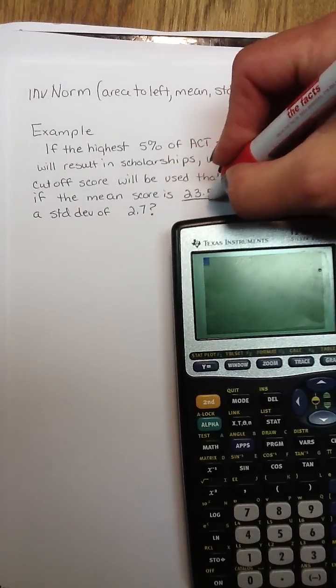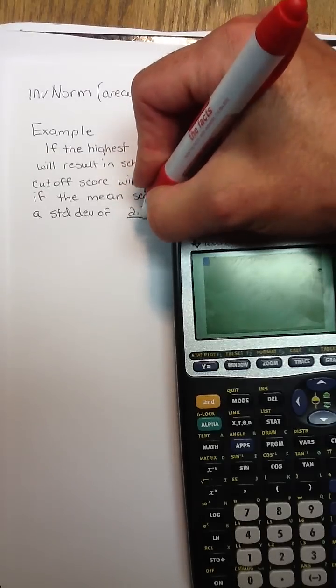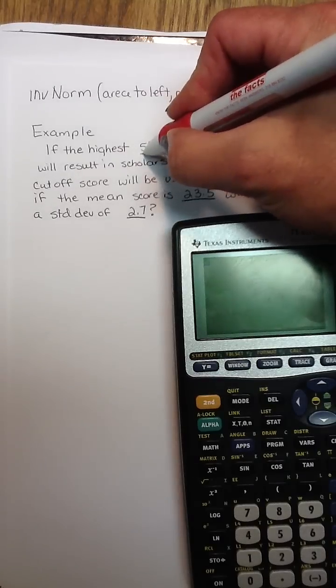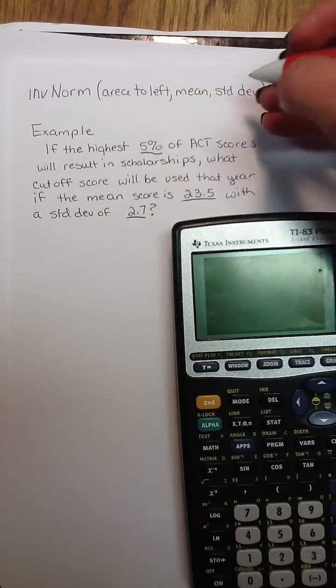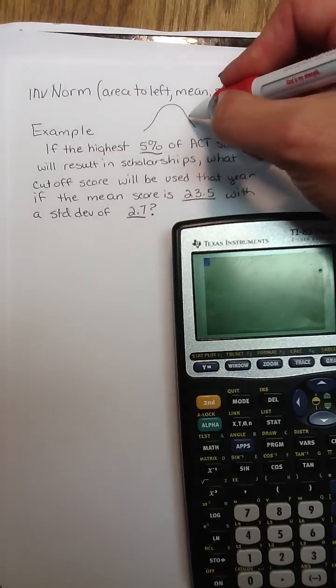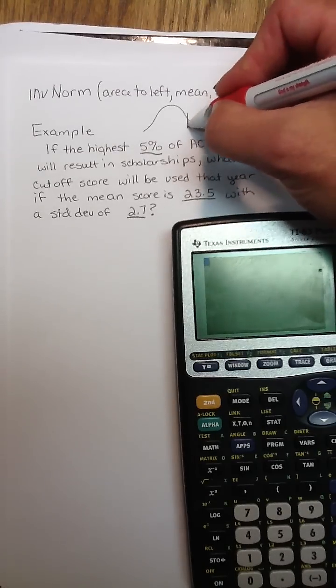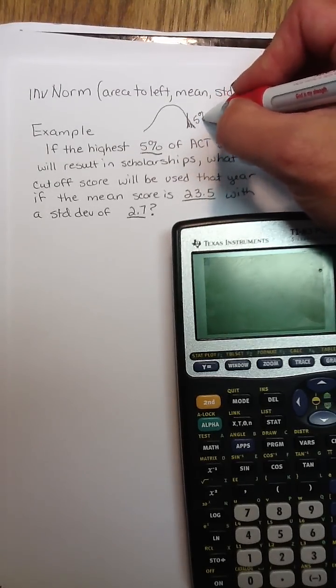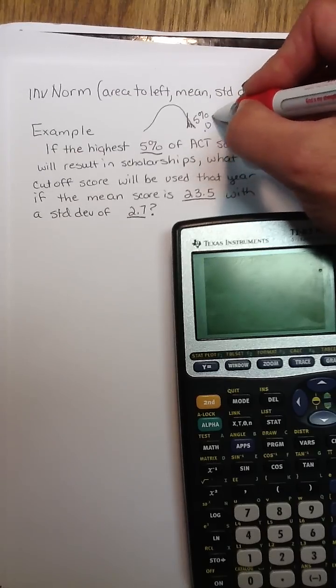So we have a mean of 23.5 and a standard deviation of 2.7. The percentage will correlate to that area under the curve. We're looking at the highest 5%, so right here the area under the curve is 5% or .05.